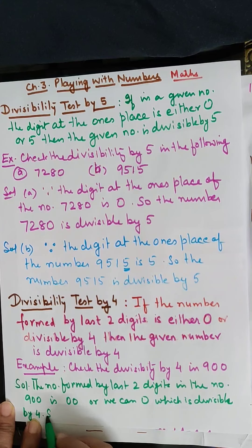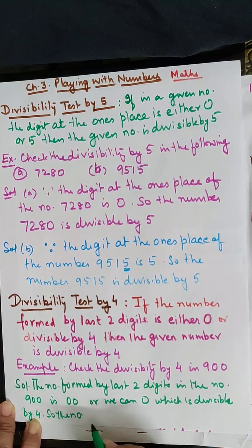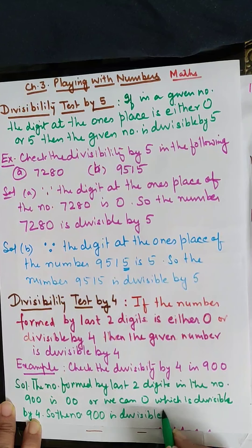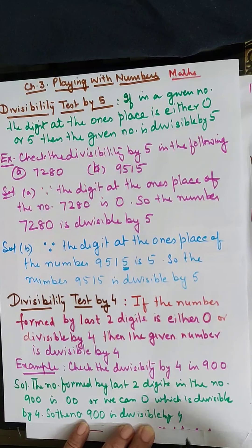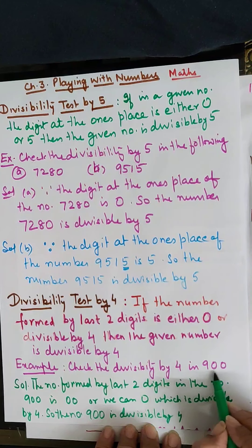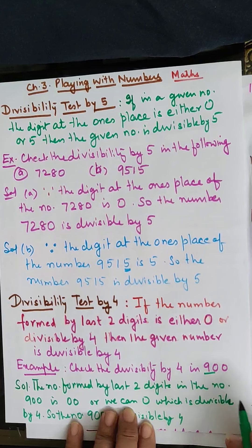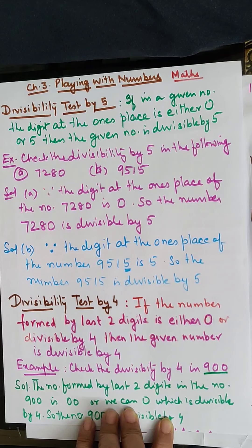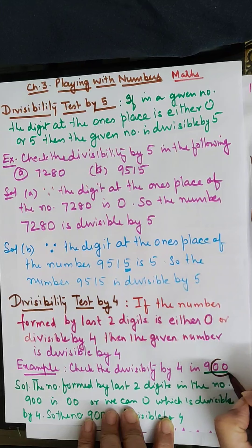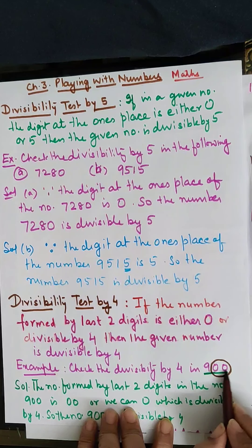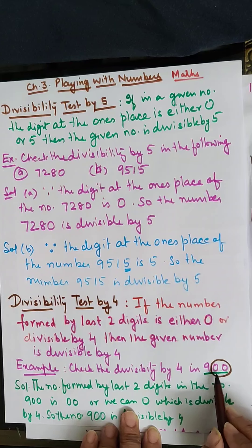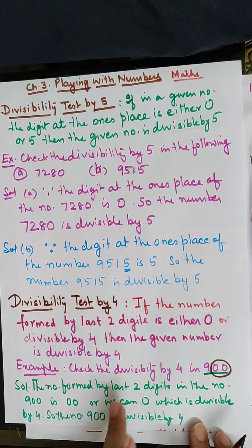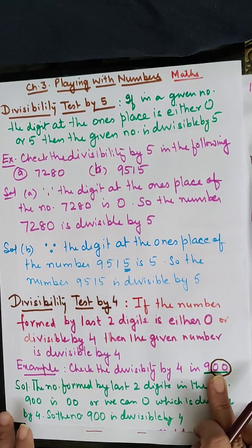So the number 900 is divisible by 4. To check this, we look at the last two digits, which form 00, or simply 0. Since 0 is divisible by 4, the number 900 is divisible by 4.